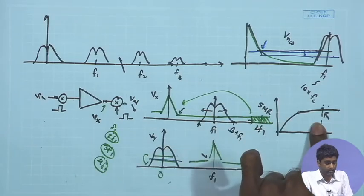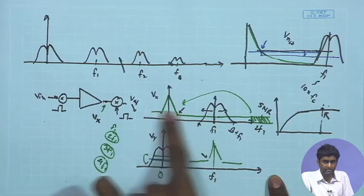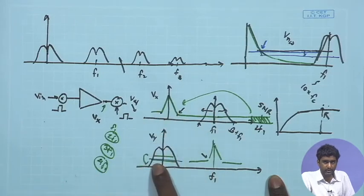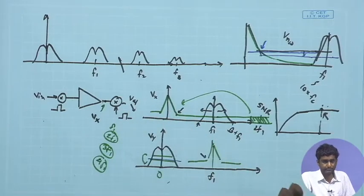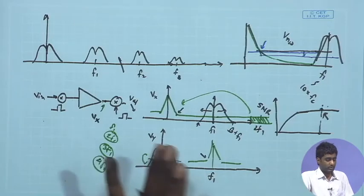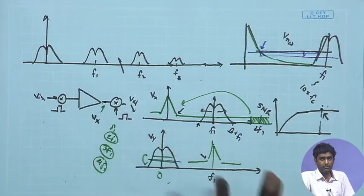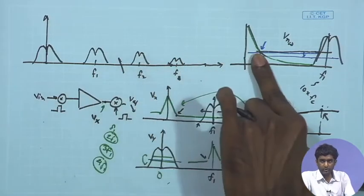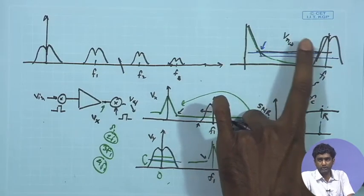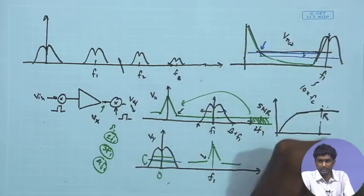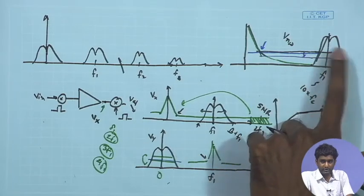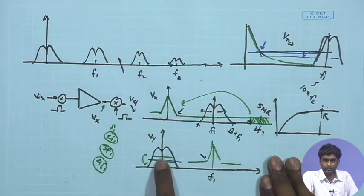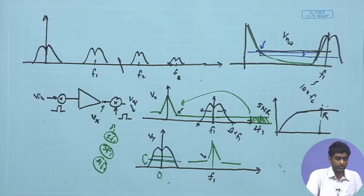Noise folding mandates lowering white noise as much as possible. Both white noise and 1/f noise must be co-optimized together. The choice of 1/f corner frequency and chopping frequency are interdependent: higher chopping frequency increases power dissipation and bandwidth requirement, and the folded white noise must also remain low. All these constraints must be addressed together when designing chopping for low-frequency noise mitigation.